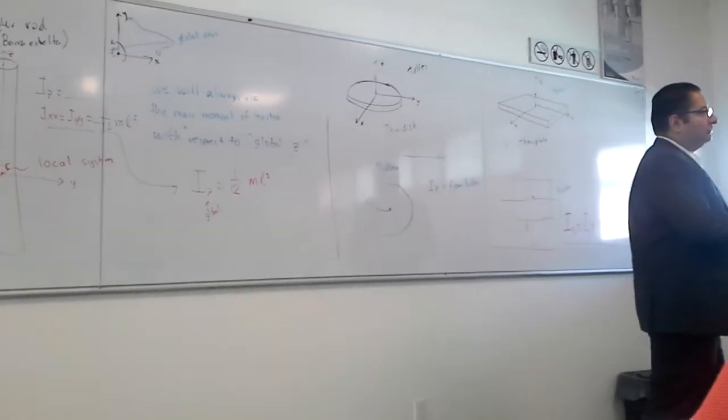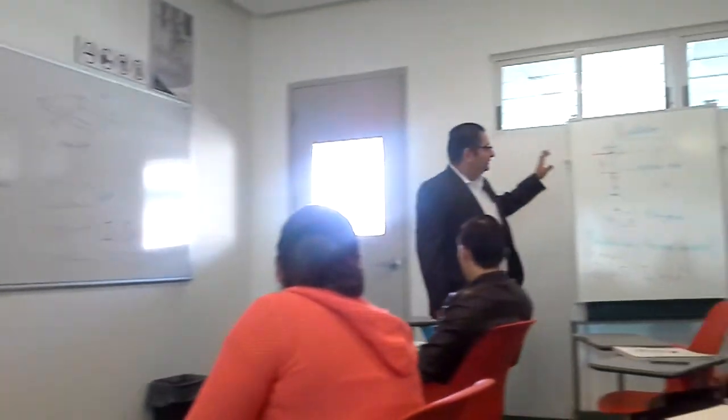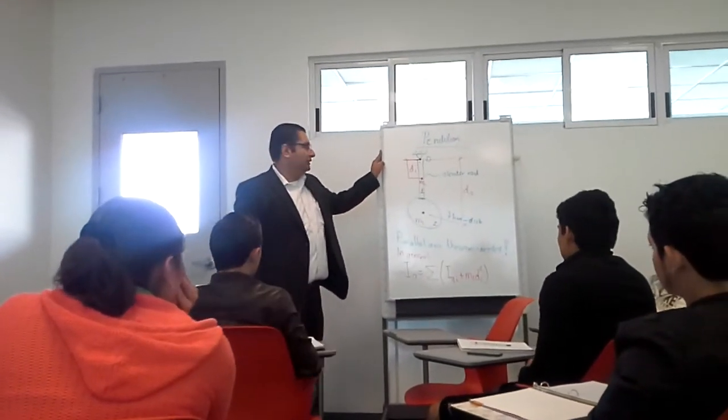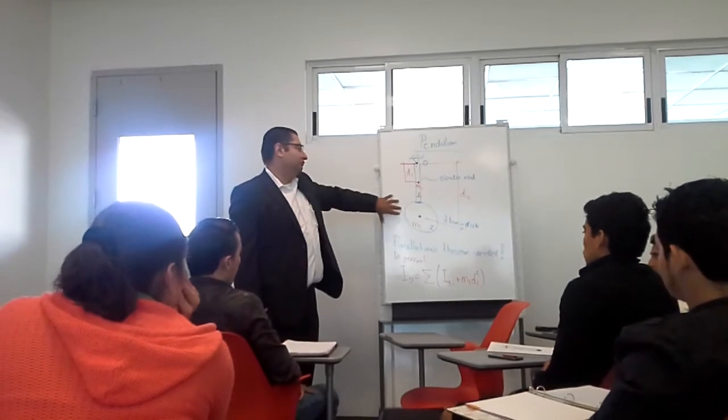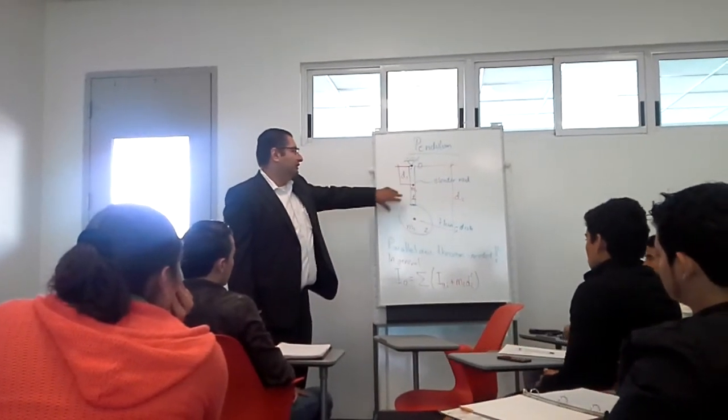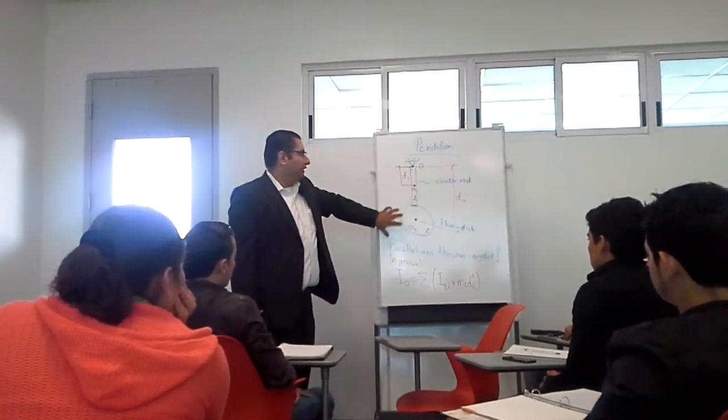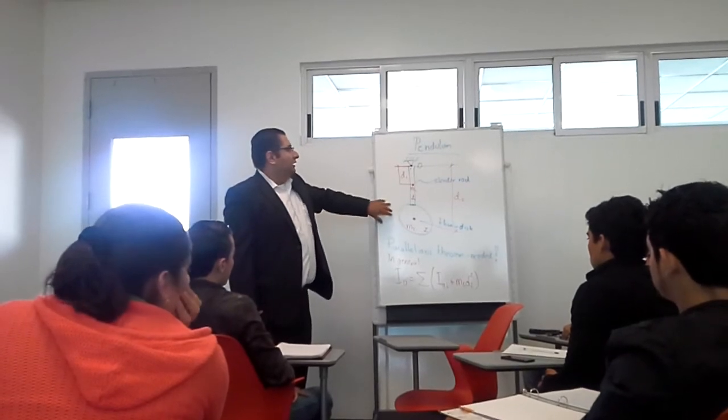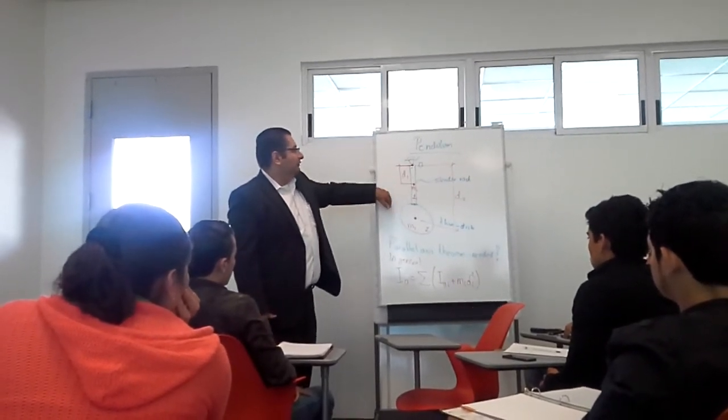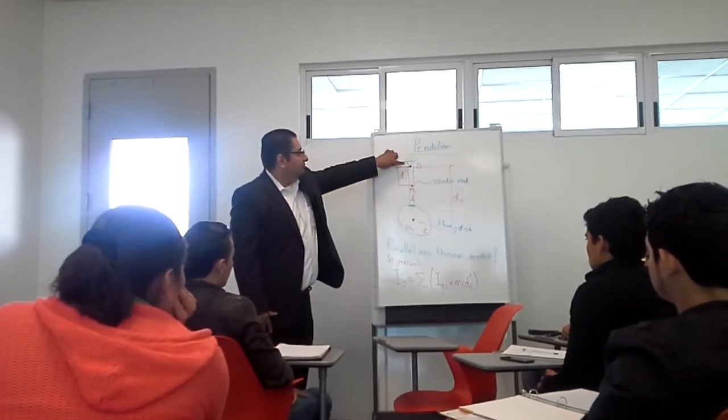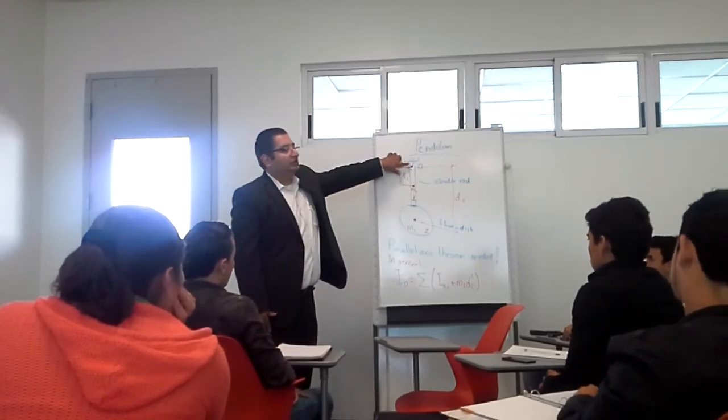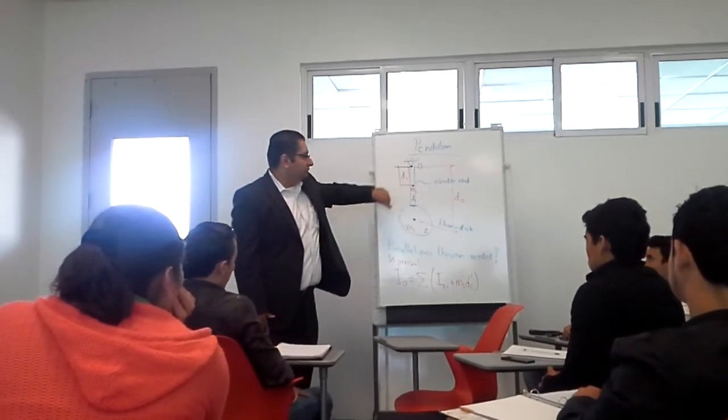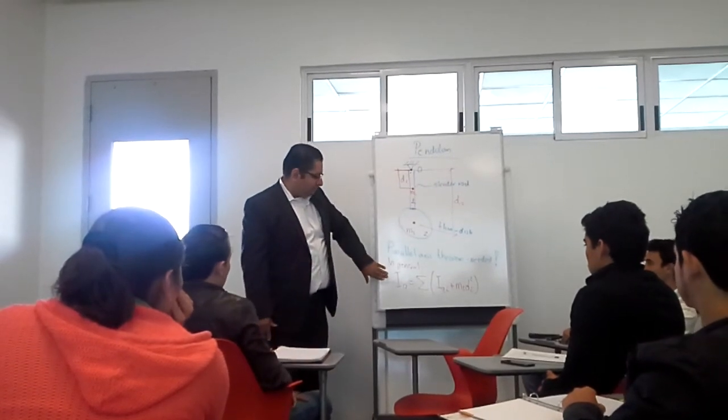We will also solve problems involving combinations of regular shapes. For instance, in this problem, when I have a thin disk with a slender rod, you need to combine the two bodies. You will probably need the mass moment of inertia of this pendulum with respect to O, the center of rotation and axis passing through O. You need to apply the parallel axis theorem.